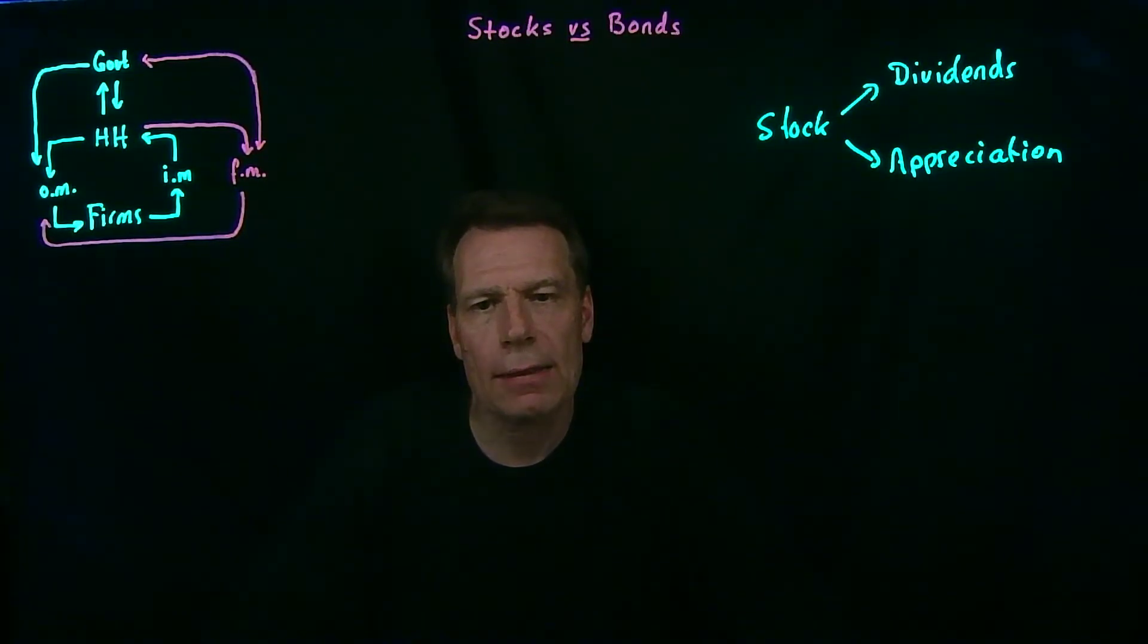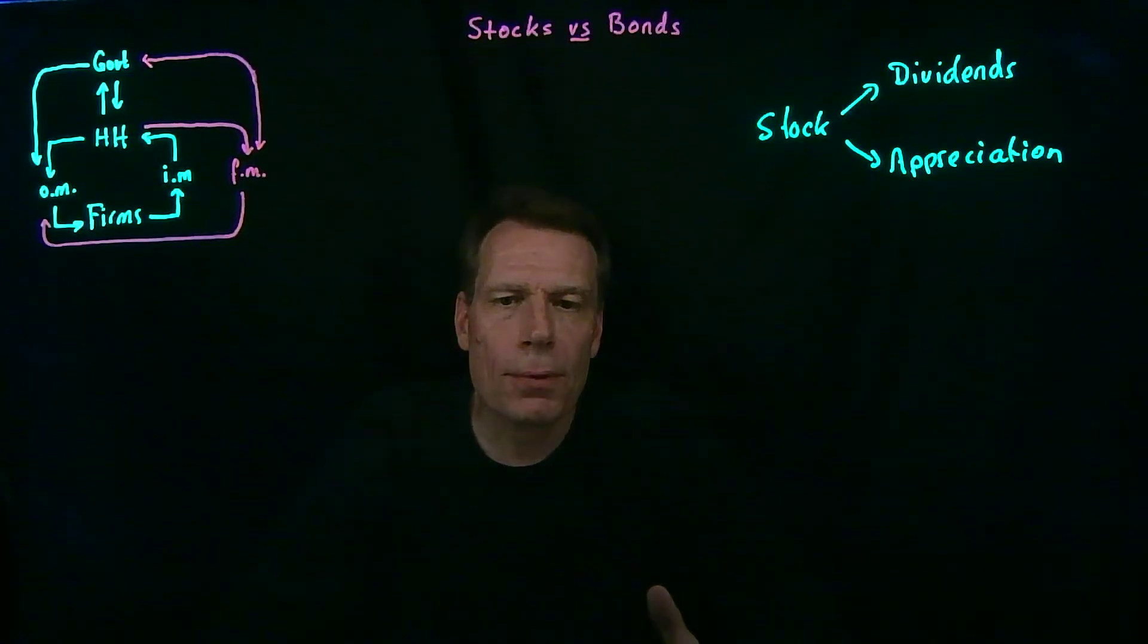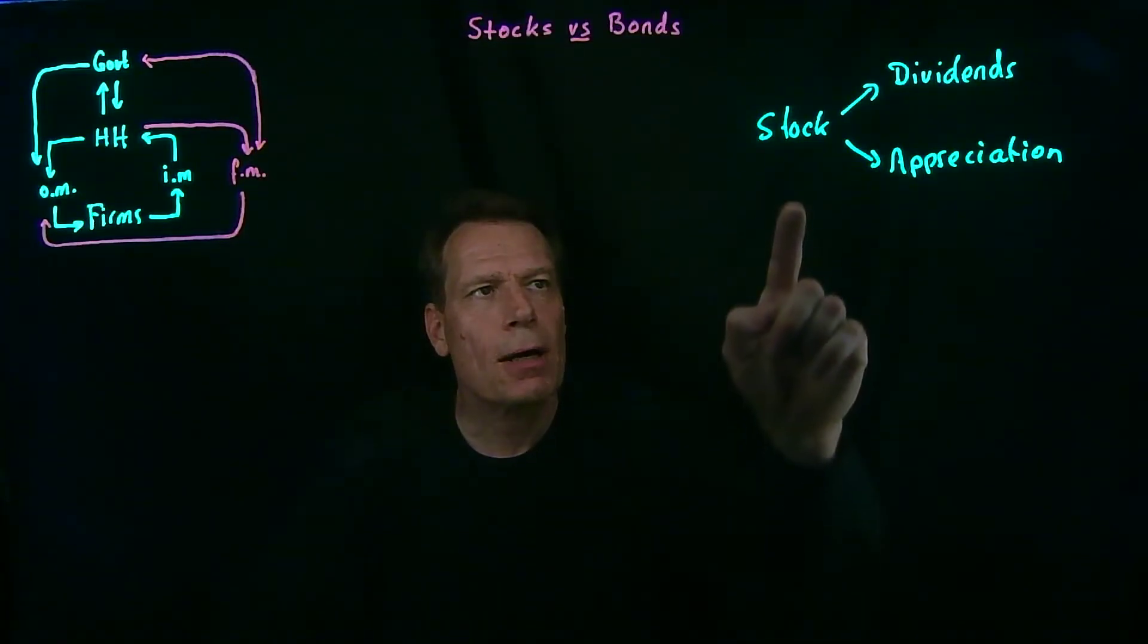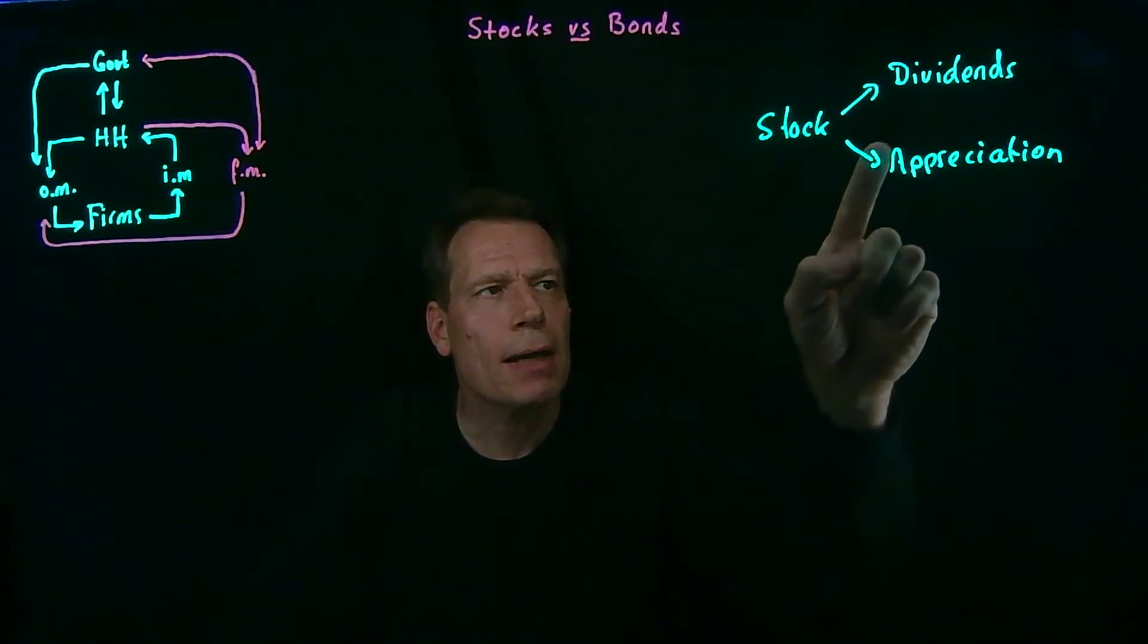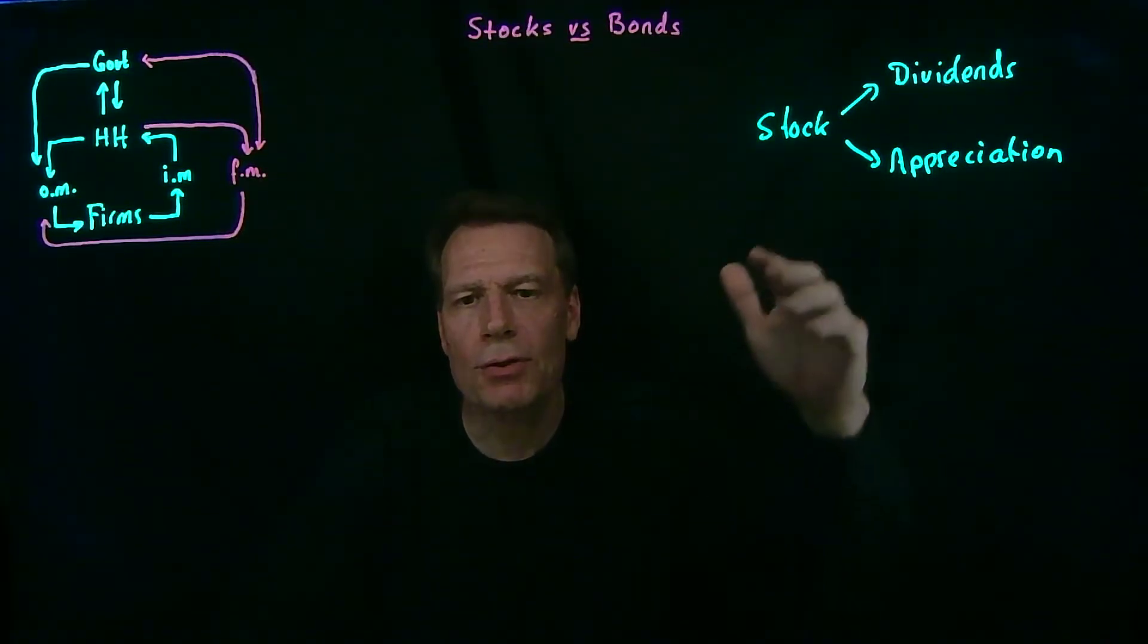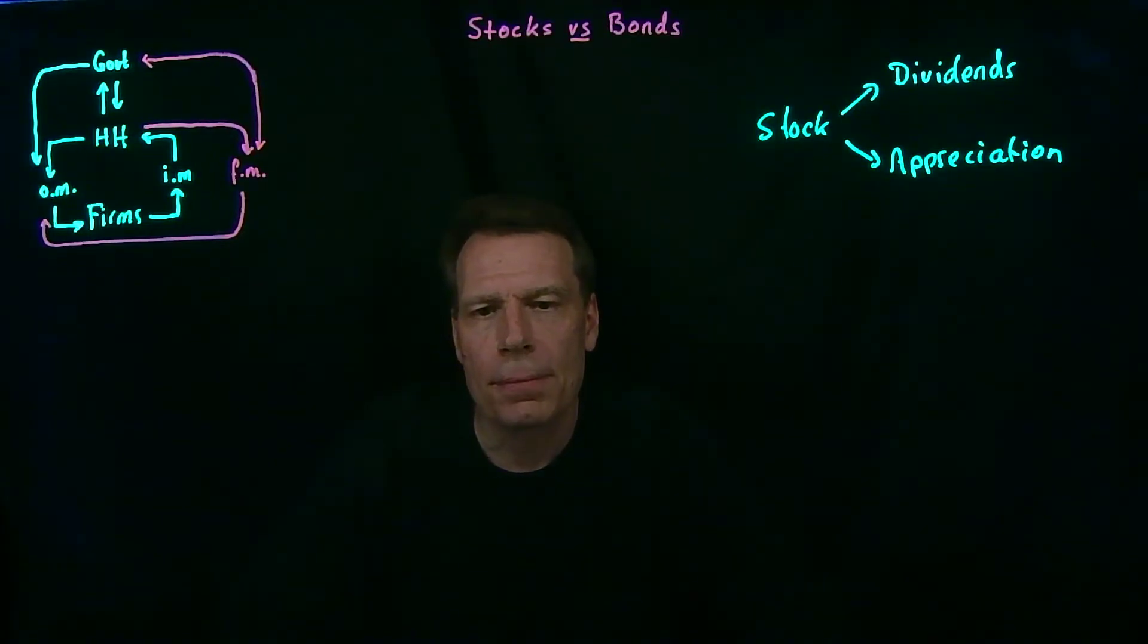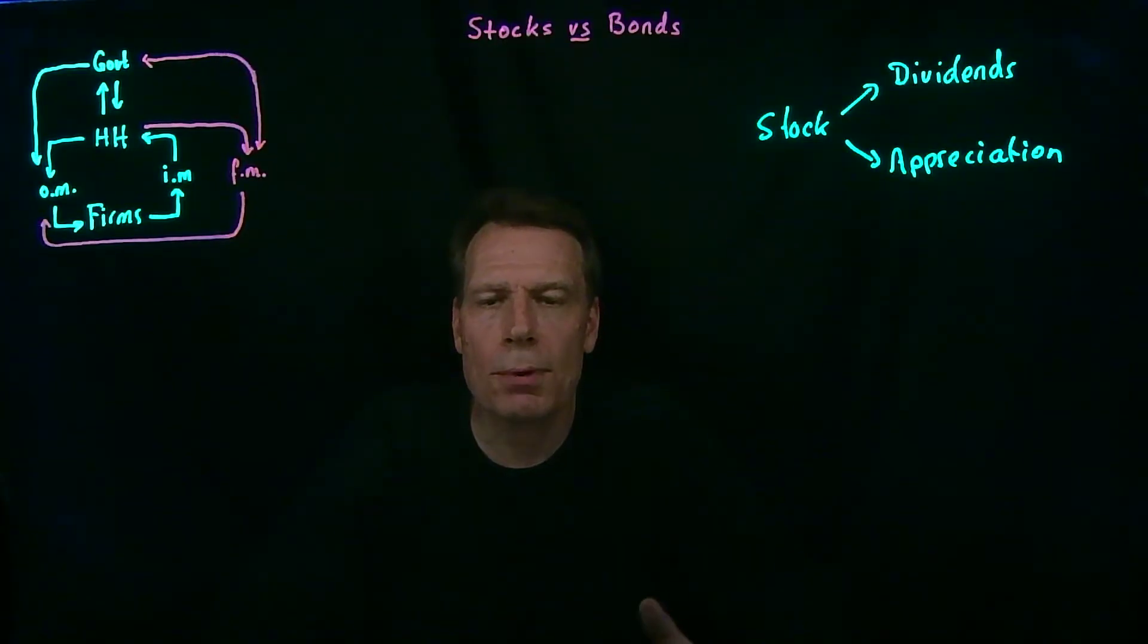And one of the reasons for that is that stocks are riskier. If a corporation goes bankrupt, then the first people to get paid are the bondholders, and only what's left over goes to the stockholders. We also know that stock prices fluctuate a lot. So how much you can get by cashing in on appreciation of stock depends on where you are in that fluctuation of the stock price. And the dividends aren't guaranteed. Boards of directors choose periodically what the next dividend will be.